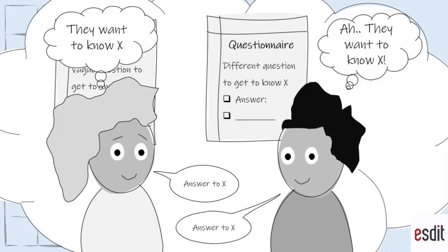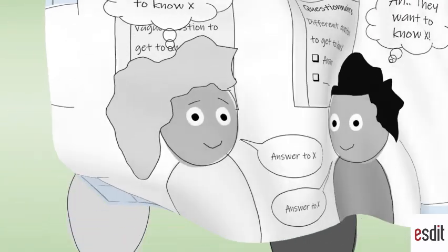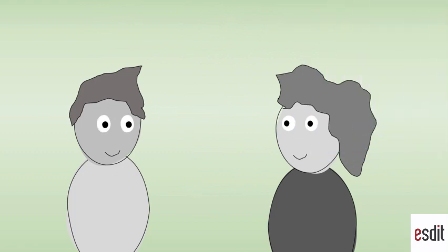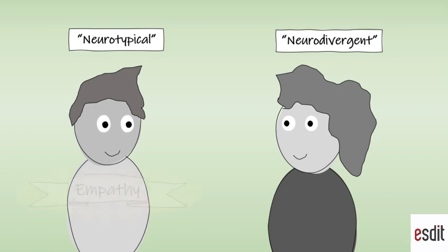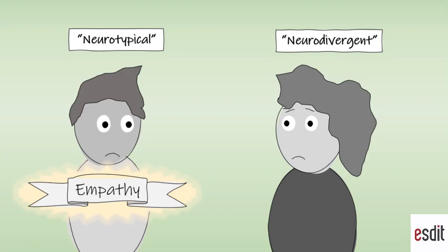As a result, only people who interpret the things they get to see in the experiment or questions they get asked in a neurotypical way and express their empathy according to this norm, only they score high on empathy tests. Only they are considered to be empathetic.